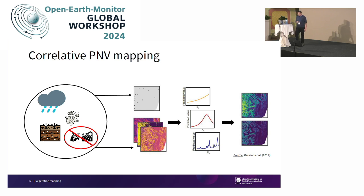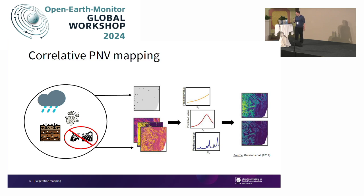On a basic principle level, how does PNV mapping work? It is actually very similar to classical correlative data-driven Earth observation mapping. The key distinction, however, is that you consider only the biophysical components, ignoring classical Earth observation components that respond to management — such as land use. And you try to pick training data that reflect the most undisturbed pieces of land, combined with the covariates, and then it becomes a typical correlative mapping.